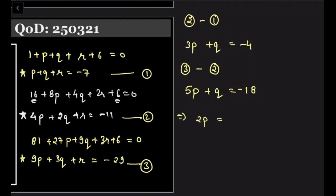So P = -7. If I put P = -7 in any of the above equations, I will get Q = -4 + 21, coming out to be 17. Yes?